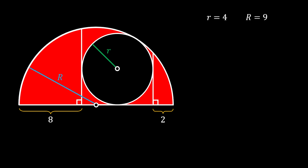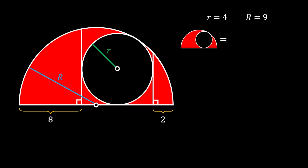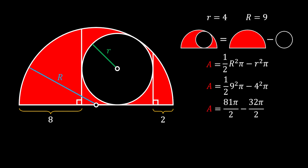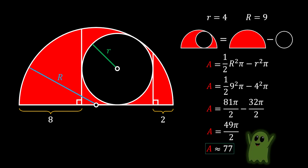Now we have everything needed to find the red shaded area. The red area equals the half circle minus the full small circle: (½)R²π − r²π. Substituting R = 9 and r = 4: (½)(81)π − 16π = (81π/2) − (32π/2) = 49π/2. This approximates to 77 square units, and that is our solution.